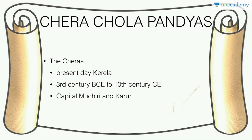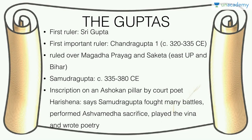The Cheras ruled present-day Kerala from the 3rd century BCE to the 10th century CE — a very long-lasting empire — with capitals at Vanji and Karur. Now we come to the Guptas, under whom very important developments occurred in art, culture, society, and economy. The first ruler was Sri Gupta.